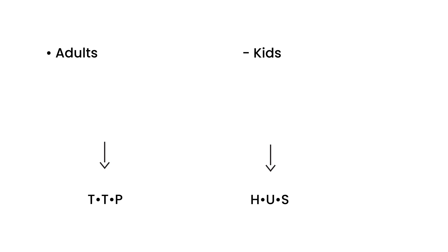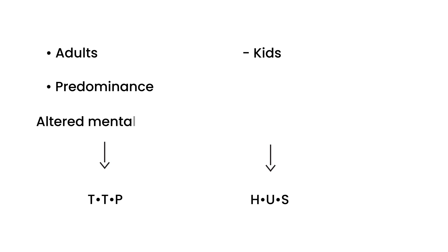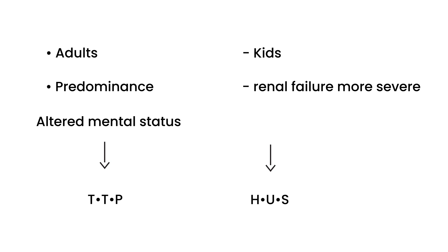Another important differentiator is the predominance of neurologic symptoms such as altered mental status, which is more common in TTP. What's more common in HUS is a predominance of more severe renal failure and renal disease. One other thing that can help you differentiate is that HUS scenarios often involve a preceding E. coli infection and E. coli diarrhea illness as a preceding factor.